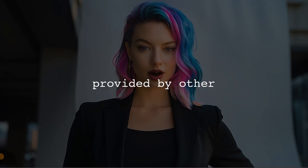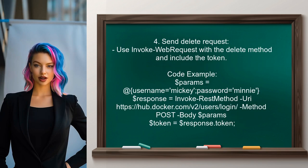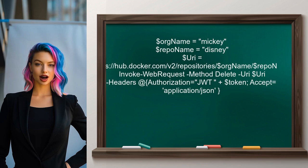Now let's look at the answers provided by other users. An alternative approach for deleting a Docker image from Docker Hub using PowerShell involves a few steps. First, you log into Docker Hub by sending your username and password to the login endpoint — this returns a token that you will use for authorization. Next, you specify your organization or username and the repository name of the image you want to delete.